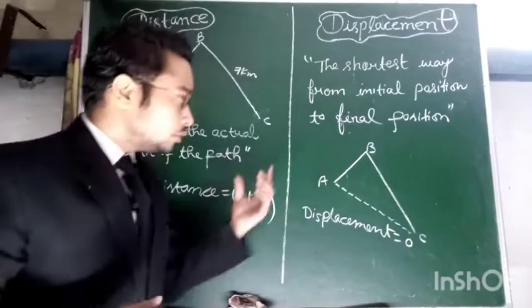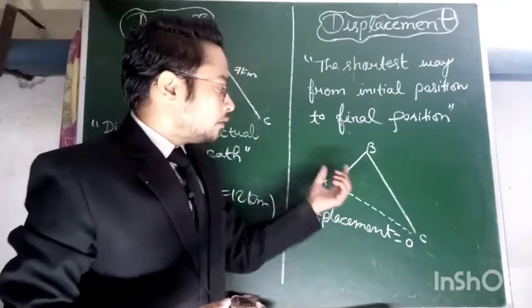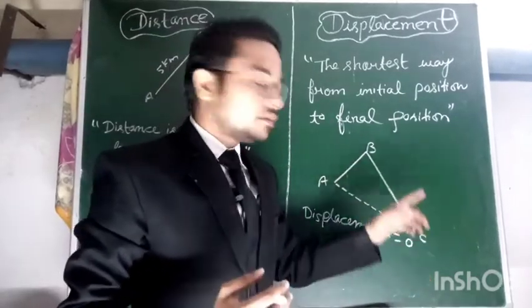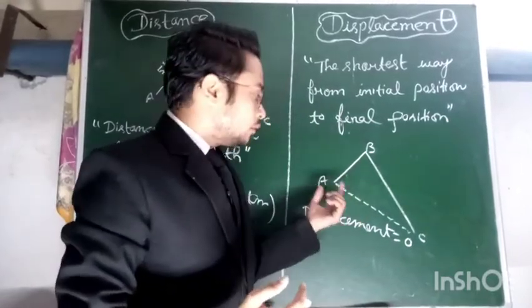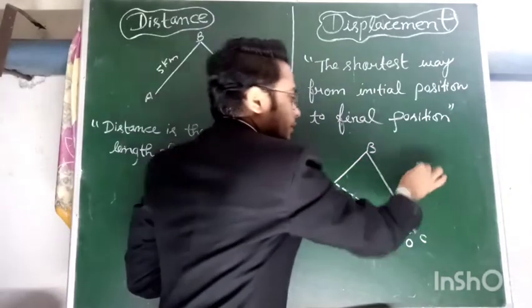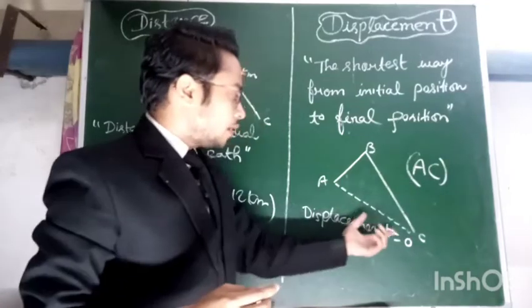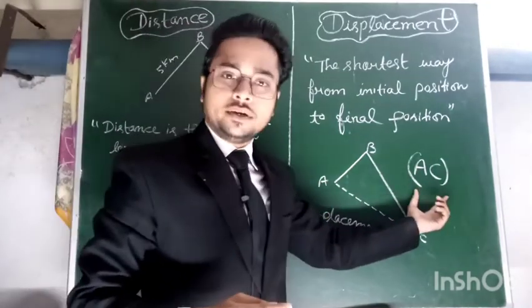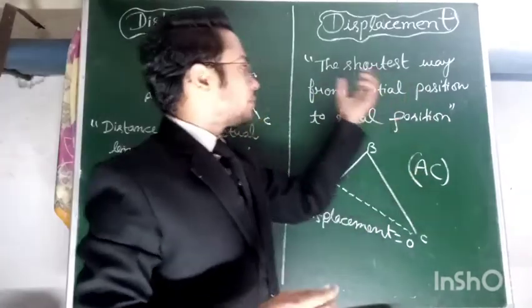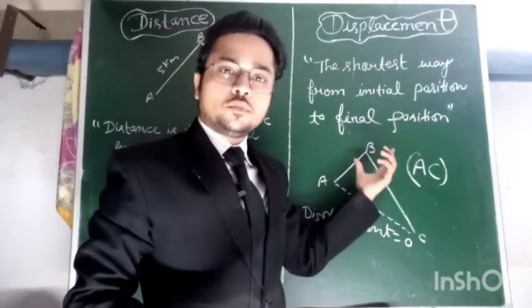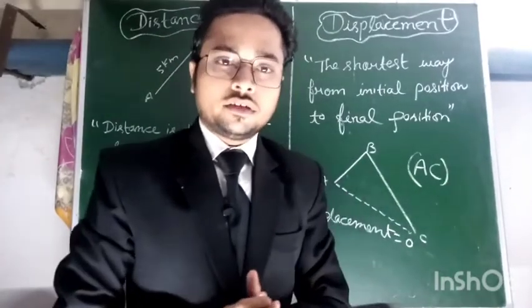Distance is the actual length of the path covered by a body, irrespective of direction. Now, what is displacement? Taking the same example, the man is now at point C, but we want to know how far he is from the starting point A. He is AC distance away from point A—AC is the displacement of the man. So we can say the shortest way from initial position to final position is known as displacement.